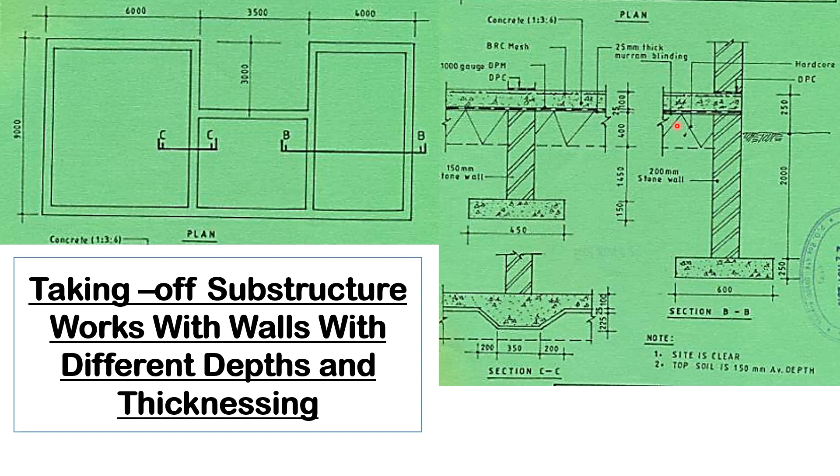We can see this is the hardcore, then this one is the madam blinding, and this is the concrete. This is the wall that is here, and we can see that the footing is different—it's 450 millimeters, different from this one which is 600 millimeters. Its thickness is 150 millimeters.